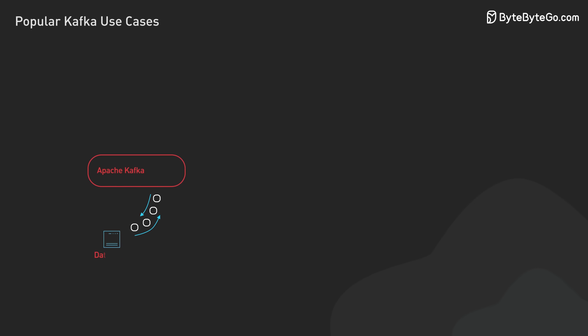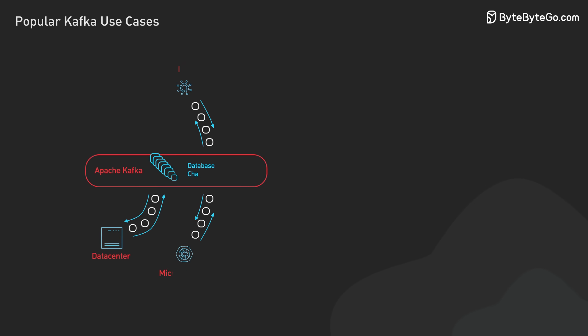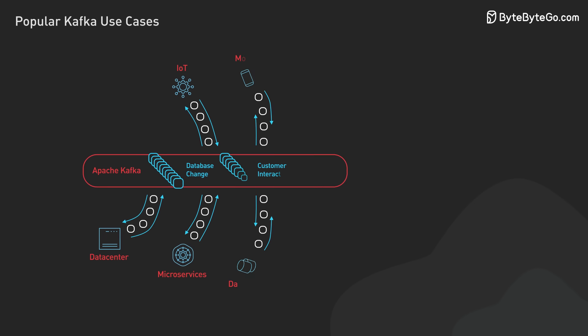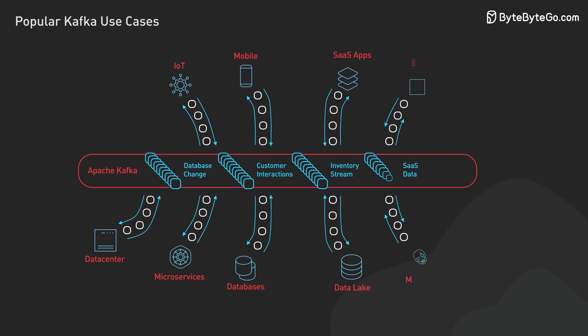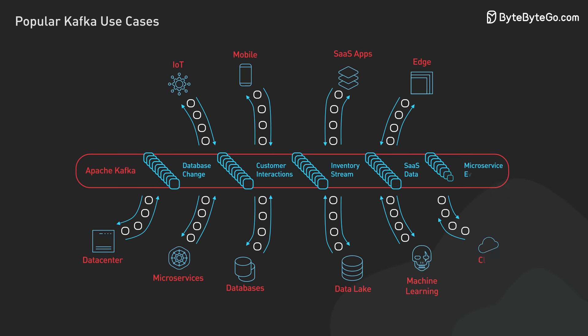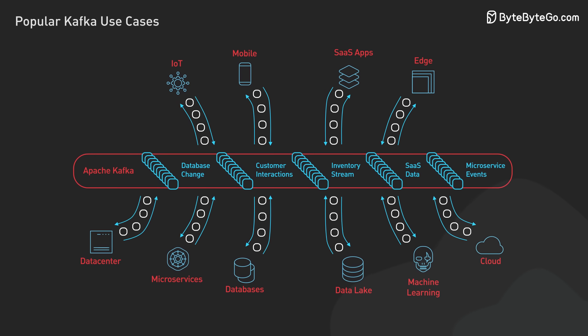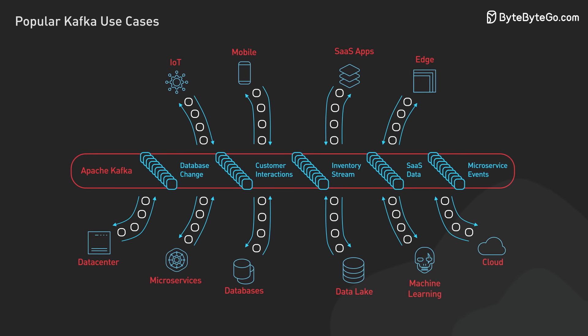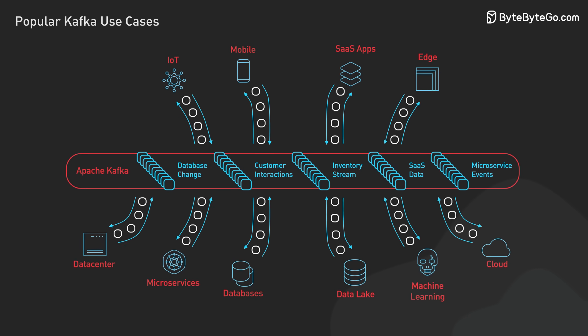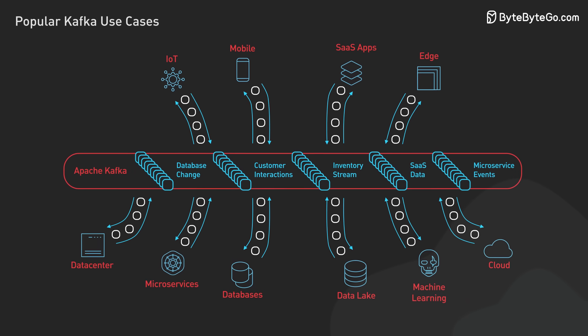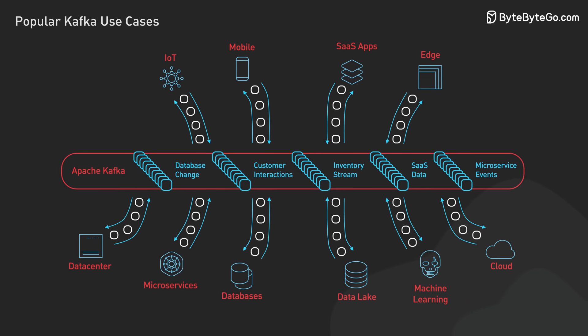Also, Kafka's persistence model allows for time travel debugging. We can replay the metric stream to understand the system state leading up to an incident. This feature can speed up root cause analysis.